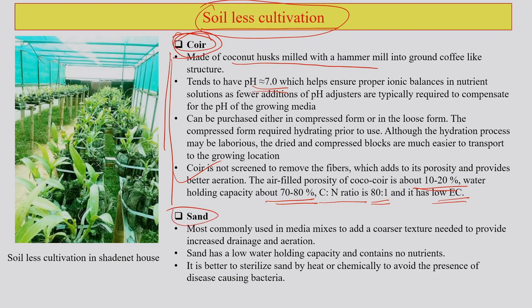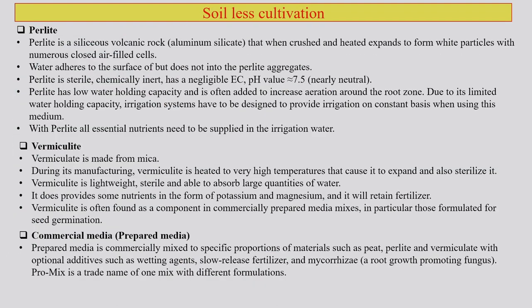Sand is another alternative medium for growing plants — not something new. It is most commonly used in media mixes to add coarseness, providing better drainage and aeration. Sand has low water holding capacity, is coarse in texture, and contains almost no nutrients. Sand is better to sterilize by heat or chemical means to avoid the presence of pathogens, which are often an issue with soil. Growing plants in sand reduces the chance of requiring chemical pesticides.